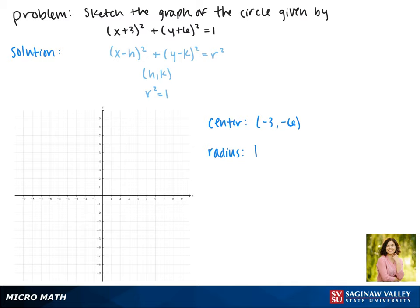So we'll graph the point (-3, -6), and it'll pass through each of these points that are one unit away. And this is the graph of our circle.